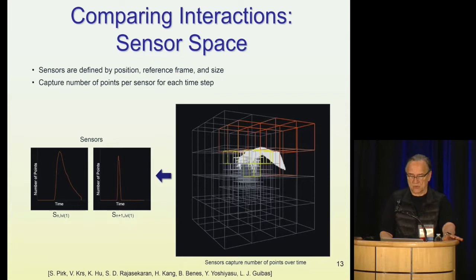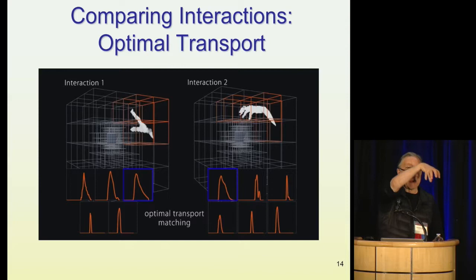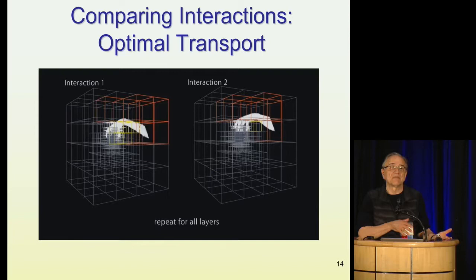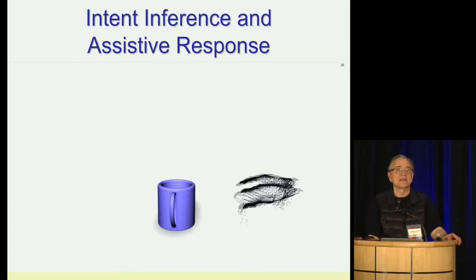For example, a cup can be approached in multiple ways. One is to grasp it by the side, but sometimes if it's too hot, we want to grasp it from the top — and we want to be able to distinguish those two interactions. At the same time, there can be two very different objects like a bed and a chair where a human sits on them, even though the geometry of the object is different. The action itself is very similar and we want to be able to make these nuanced distinctions. Ultimately, the goal is to understand human intent and create smart environments where objects make it easier for the human to accomplish what they are trying to accomplish.